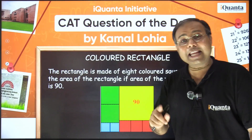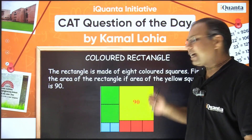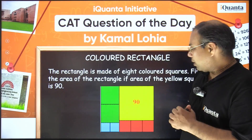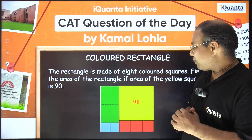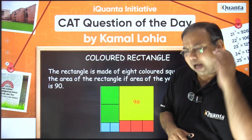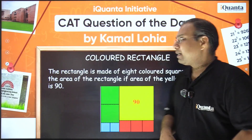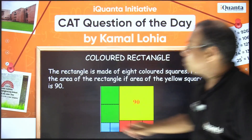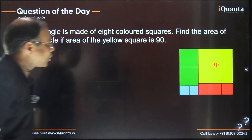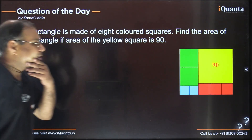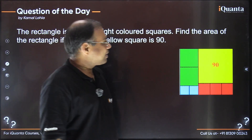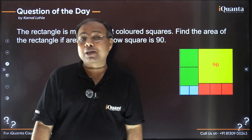The only numerical information given is that the area of the yellow square is 90. We need to find the area of this complete rectangle. There could be various ways to approach this — ratios are one very important part.